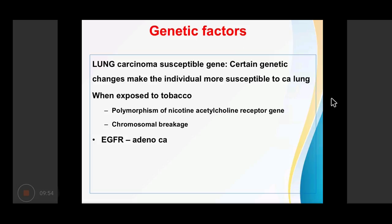A lung carcinoma susceptibility gene has also been identified. Certain genetic changes make an individual more susceptible to lung cancers when exposed to tobacco smoke, such as polymorphism of the nicotine acetylcholine receptor gene (15Q21) and CYP1A1, or other chromosomal breakages. Genetic mutations causing lung cancers in non-smokers include EGFR, which mostly causes adenocarcinomas.